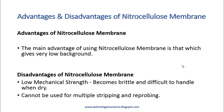There are certain advantages and disadvantages of the nitrocellulose membrane. The main advantage is that it gives very low background, which is important for sensitive detection. The disadvantages are that it has low mechanical strength and cannot be used for multiple stripping and reprobing. The membrane becomes brittle and difficult to handle when dry.